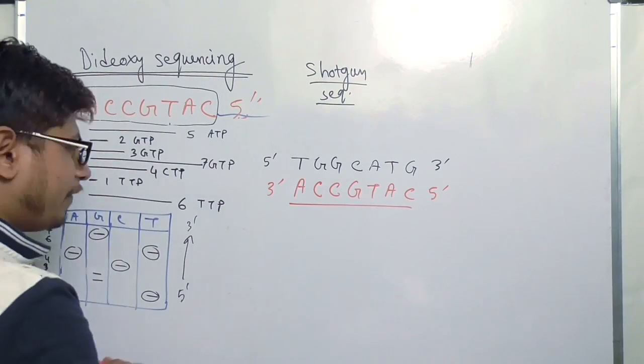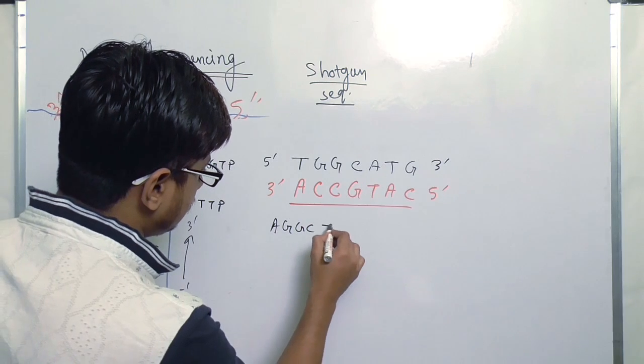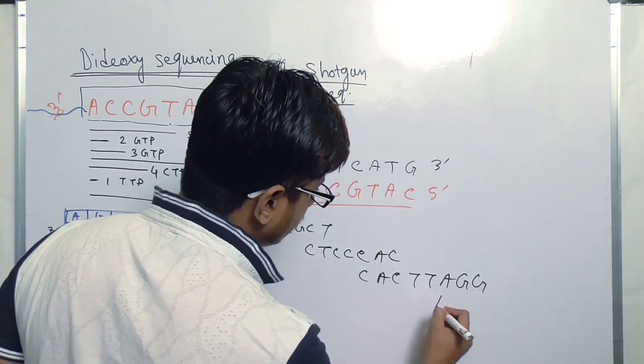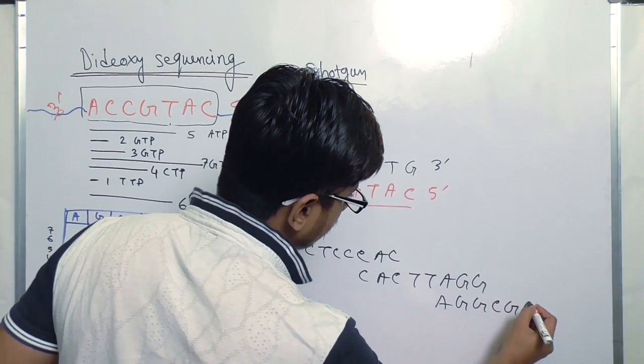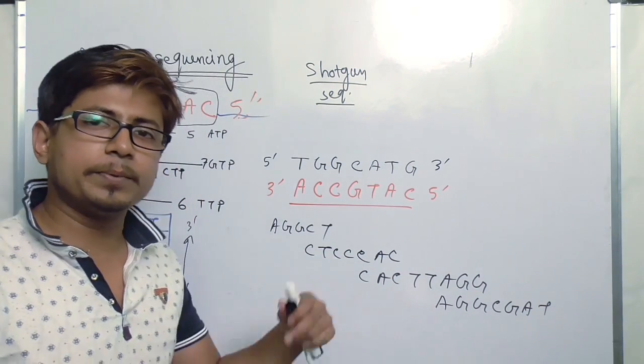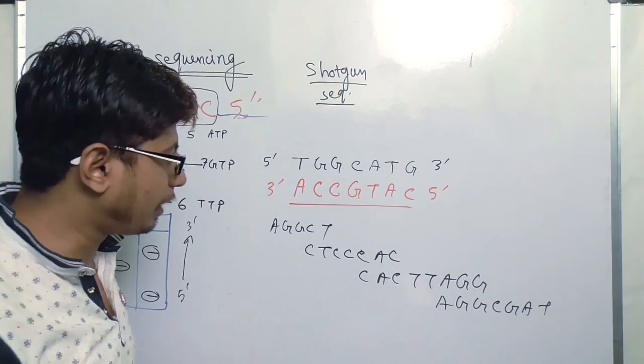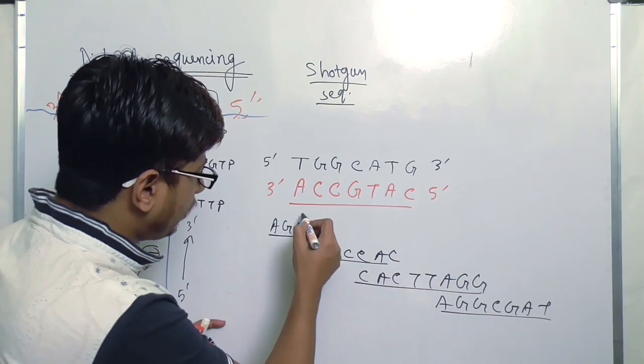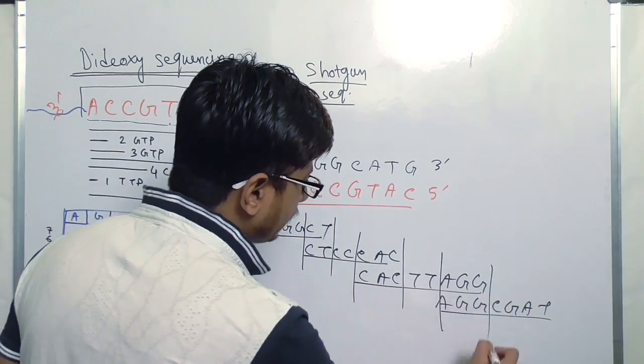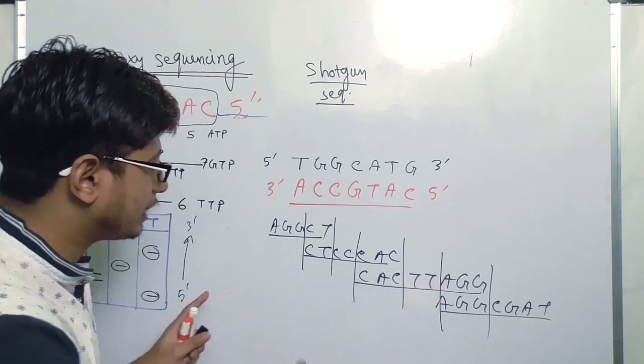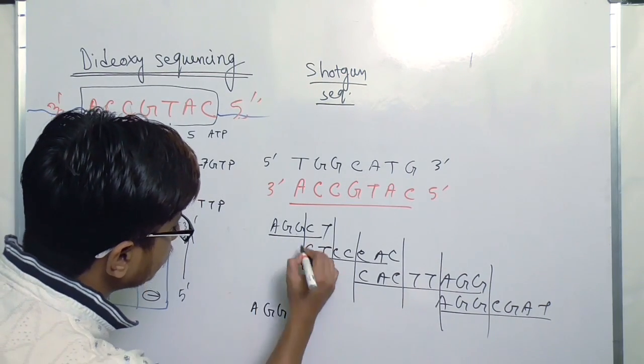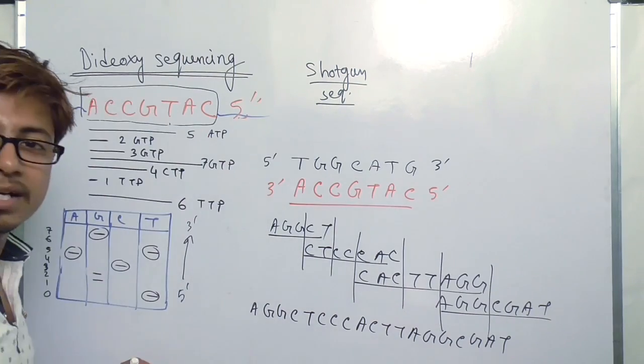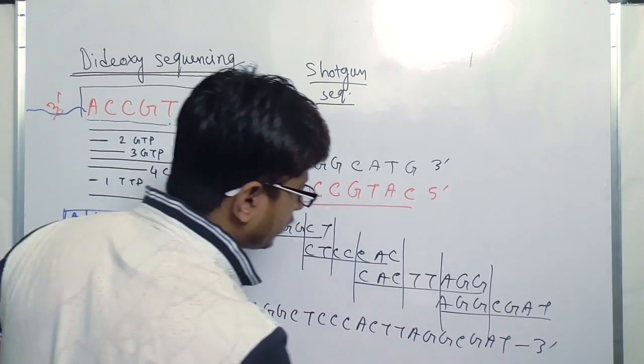For example, let's say we start with ASGGCT, then start with TCCAC, and say CACTTAGG, then AGGCGAT. Let's say these are the different fragments that we obtain from different reactions. Once we compile the data, what we find out - we call these fragments as contigs or contiguous sequences. Whenever we find out these contigs, we try to align them to find out overlapping regions. See, we find so many overlapping sequences in between them. These overlapping sequences are going to tell us about complete stretch of the sequence. Like now: AGGCTCCCCACTTACGGCGAT. This is how we get a long stretch of the sequence.